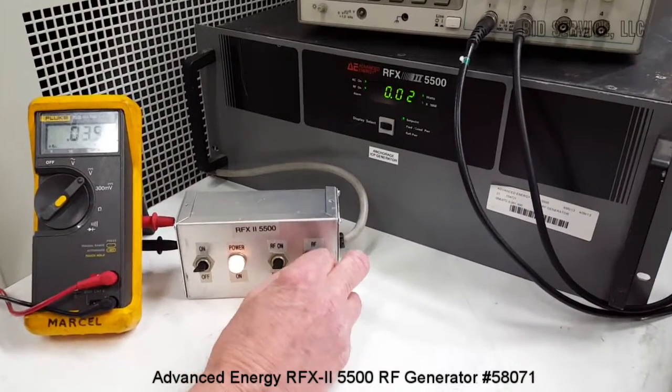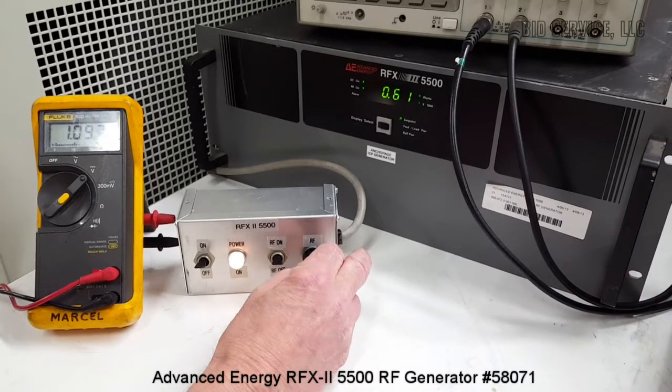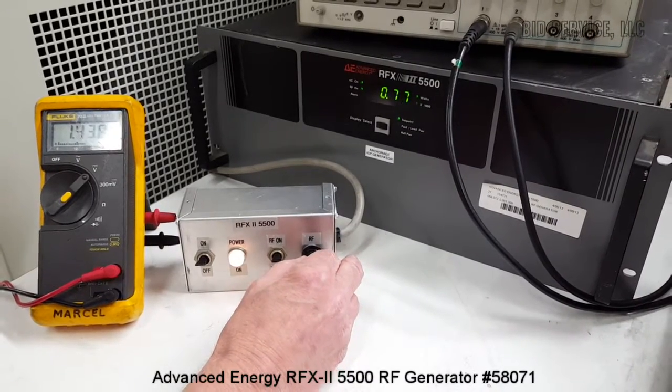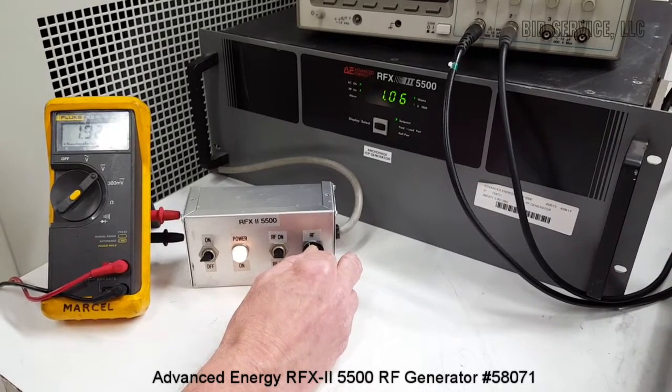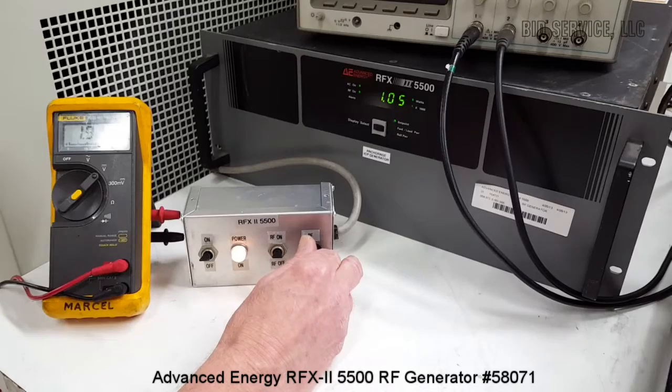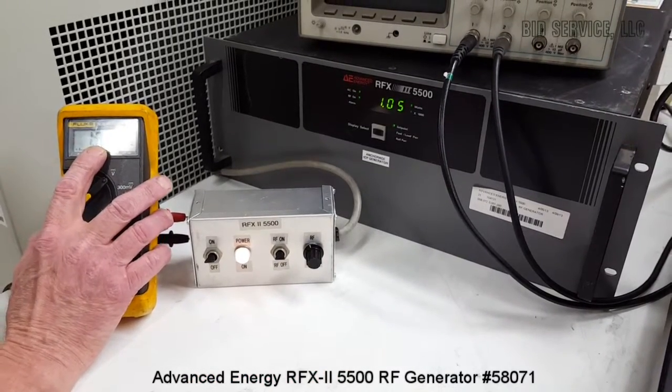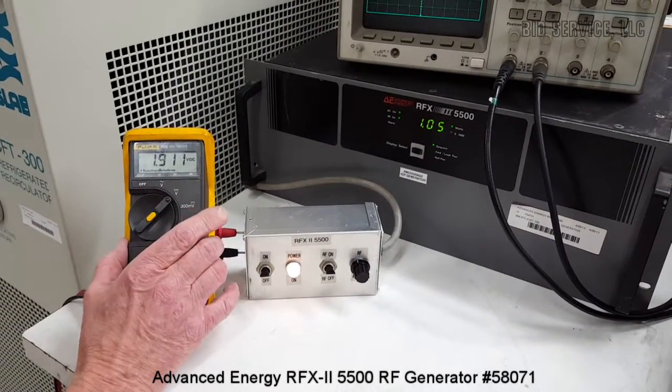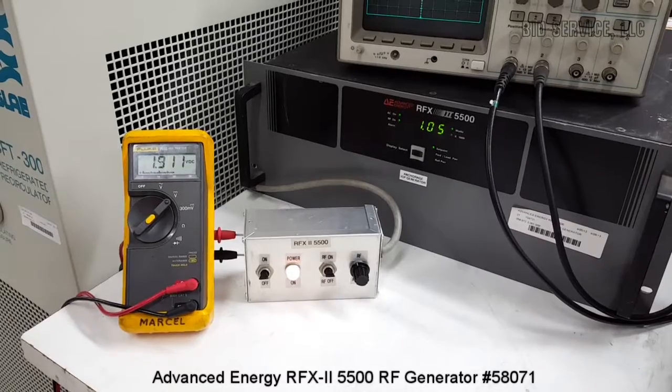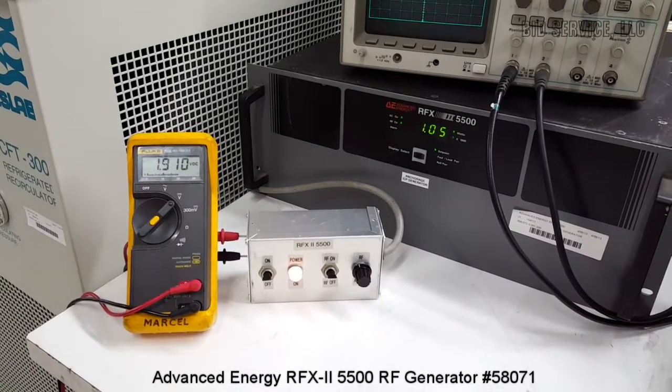I can vary the output. Let's say we adjust it to one kilowatt. This shows the input reading from 0 to 10 volts DC will produce from 100 to 5500 watts of output power.